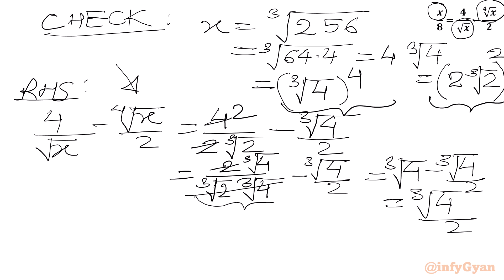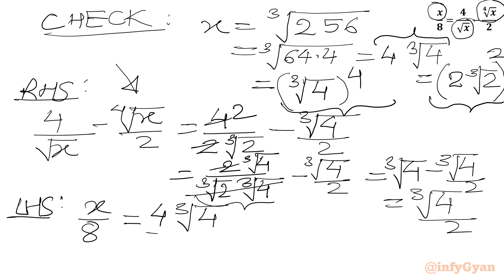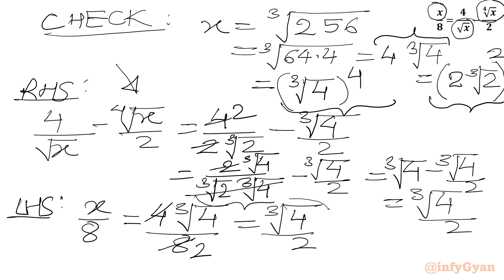Checking the LHS: x over 8 equals 4·∛4 over 8, which simplifies to ∛4 over 2. LHS equals ∛4 over 2, which equals RHS. Both sides match, so our solution x equals cube root of 256 is confirmed and verified.